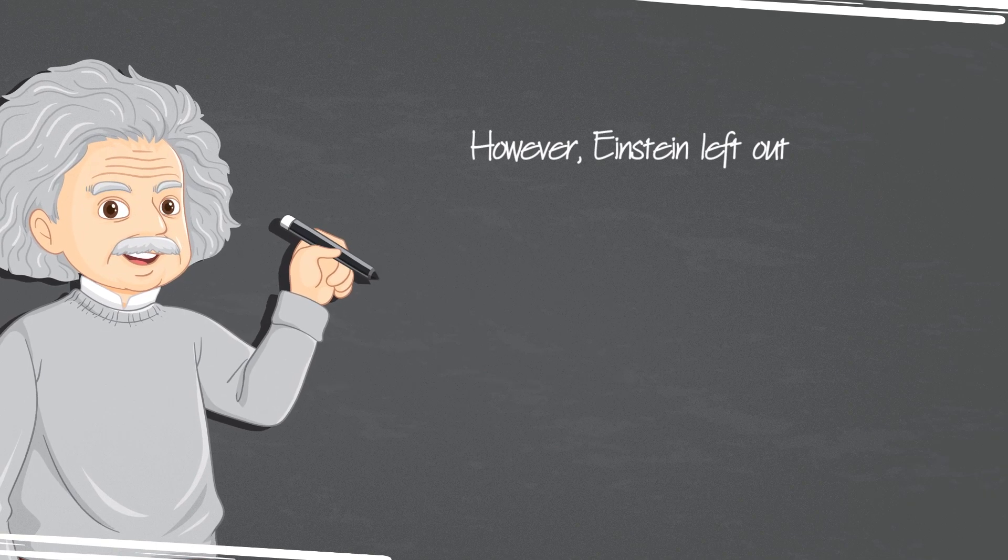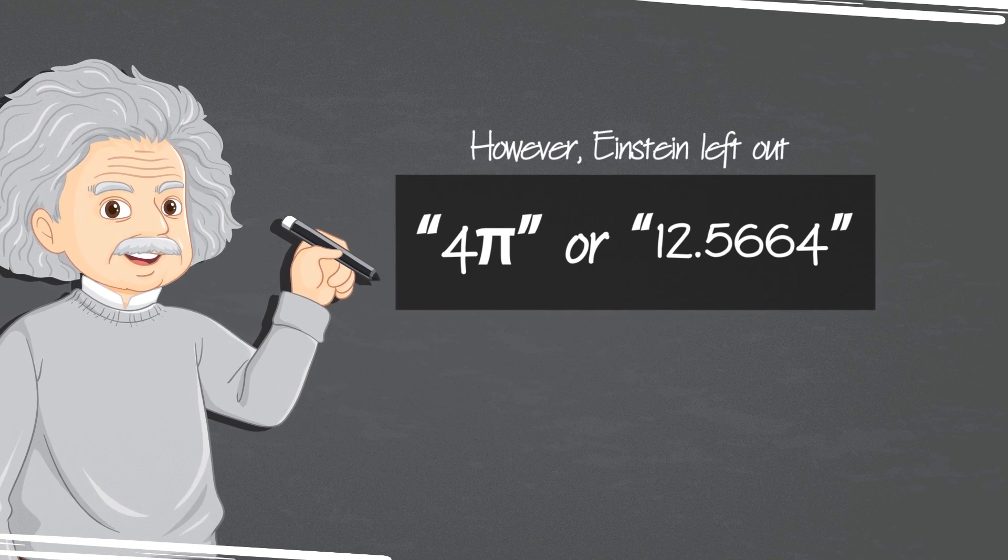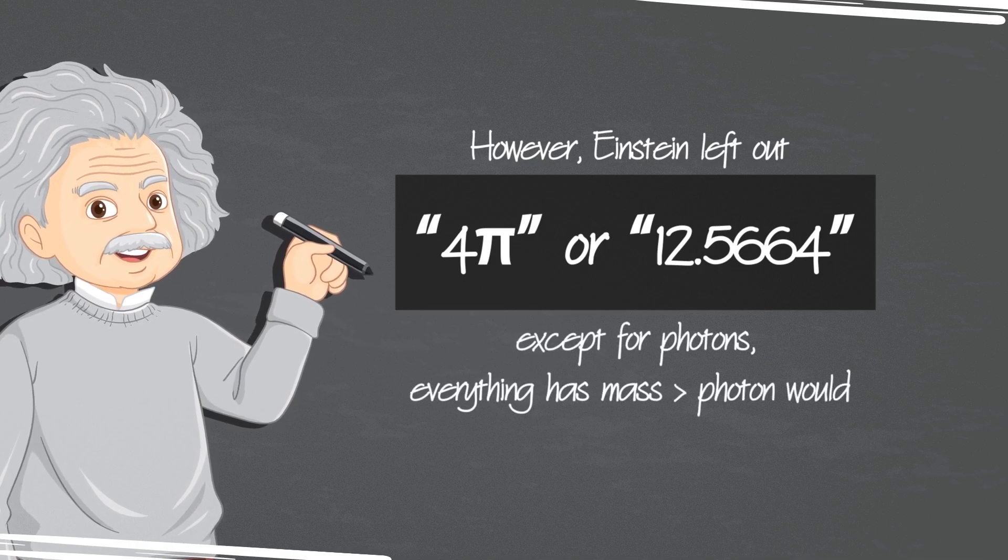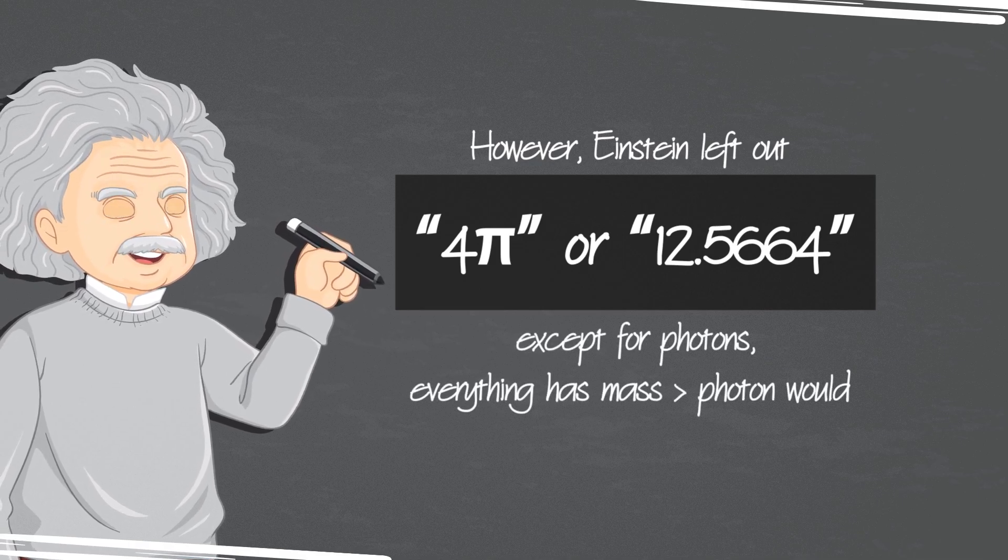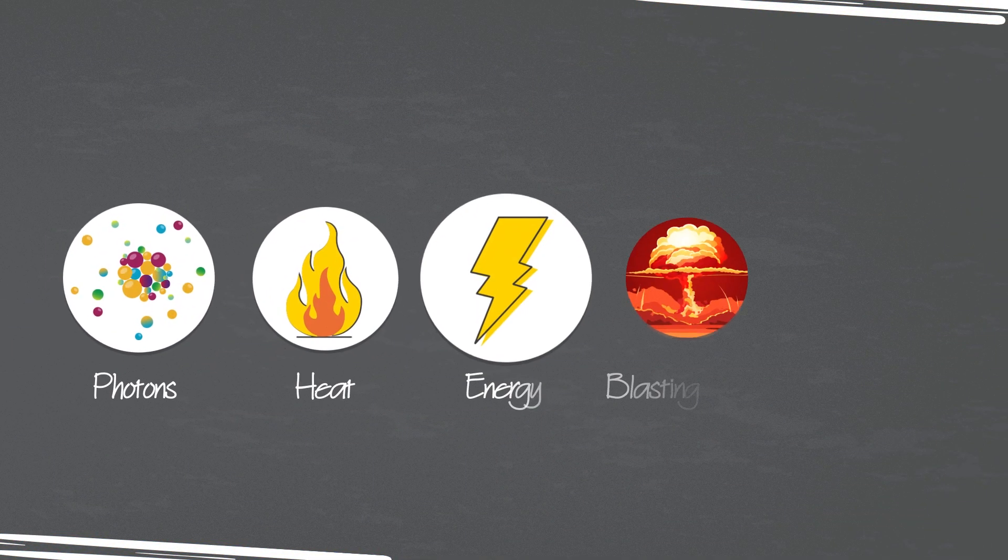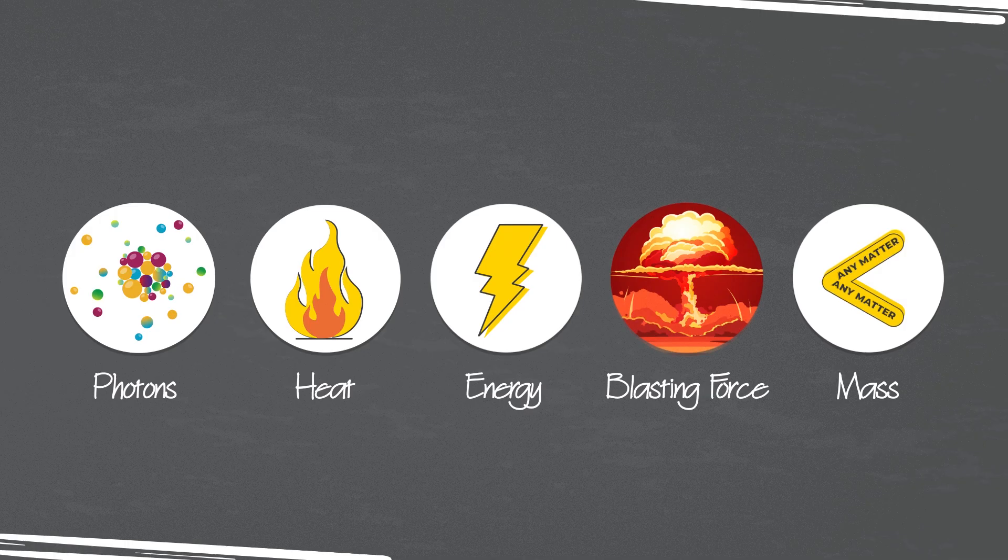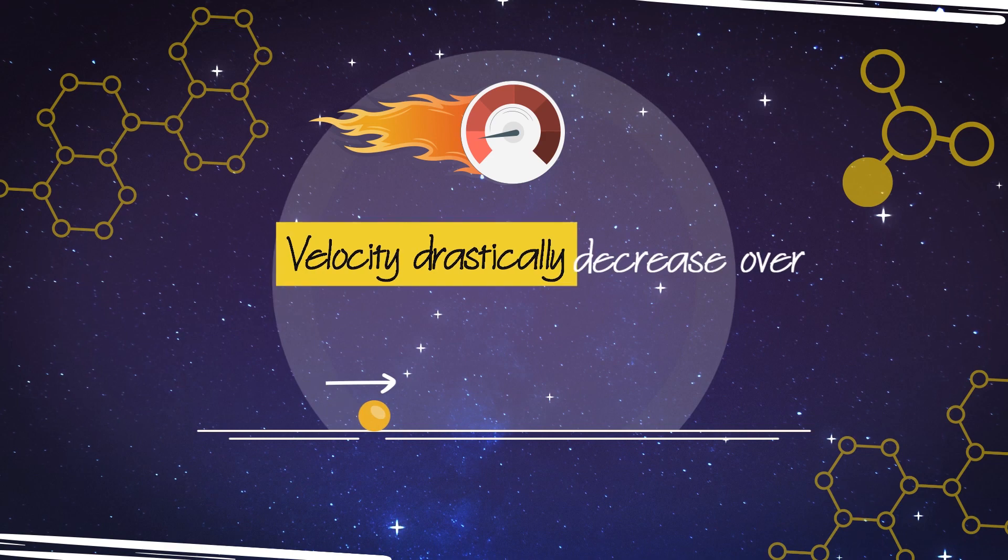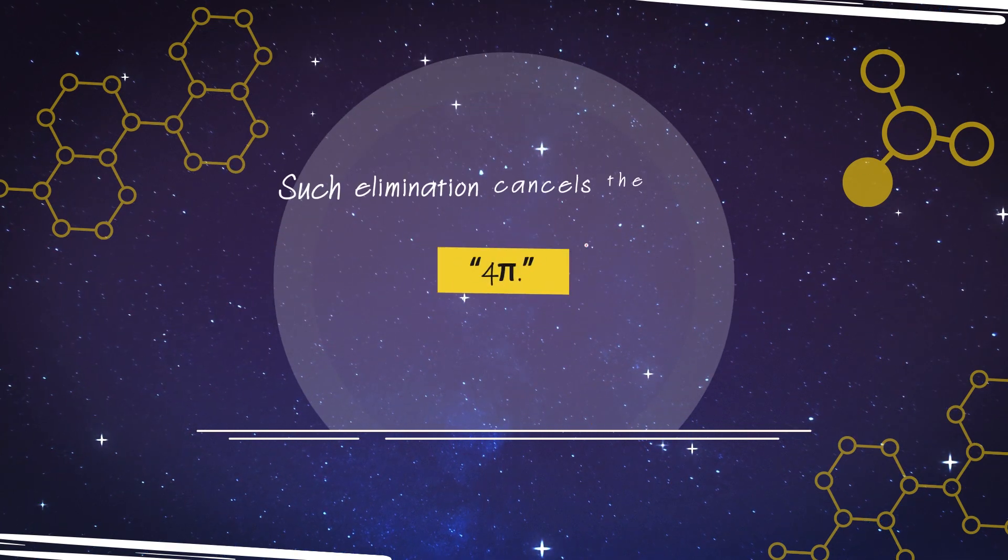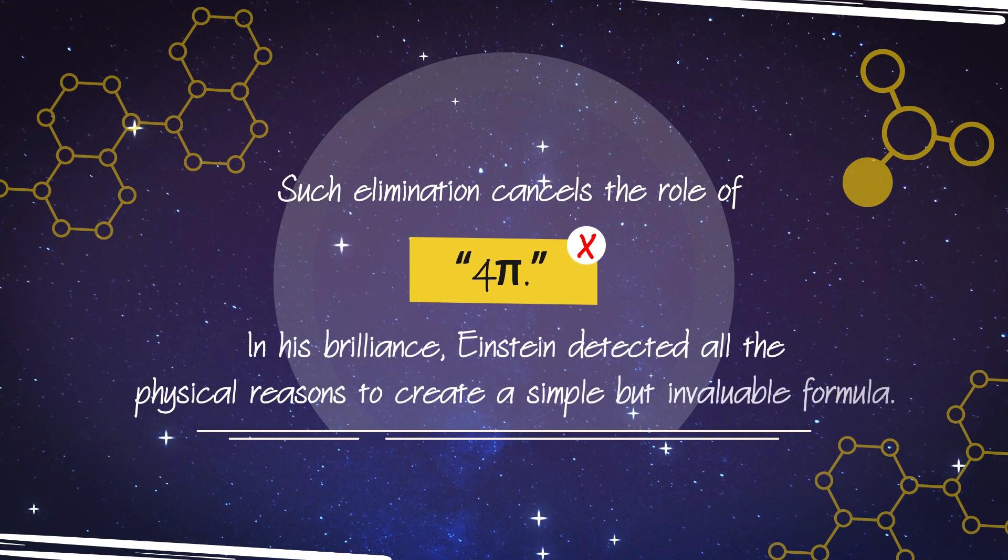However, Einstein left out 4 pi, or 12.5664, probably because, except for photons, everything has mass greater than photon would move much slower than C. In addition, unlike photons, the heat, the energy, the blasting force, and the remnant of mass's velocities drastically decrease over time and dissipate long before reaching the sphere's surface. Such elimination cancels the role of 4 pi.